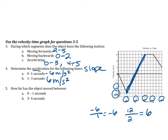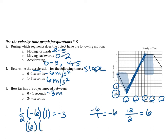For number five, we're looking for how far the object moved between zero and one seconds, and three to four seconds. From zero to one, we find the area between our line and the x-axis — we get a triangle, so it's one half times a height of negative six times a width of one, which equals negative three. So the object went negative three meters during that one second. For three to four seconds, we have a rectangle from our line to the x-axis. The height is six and the width is one second, so its area is six meters — the object traveled six meters during that one second.